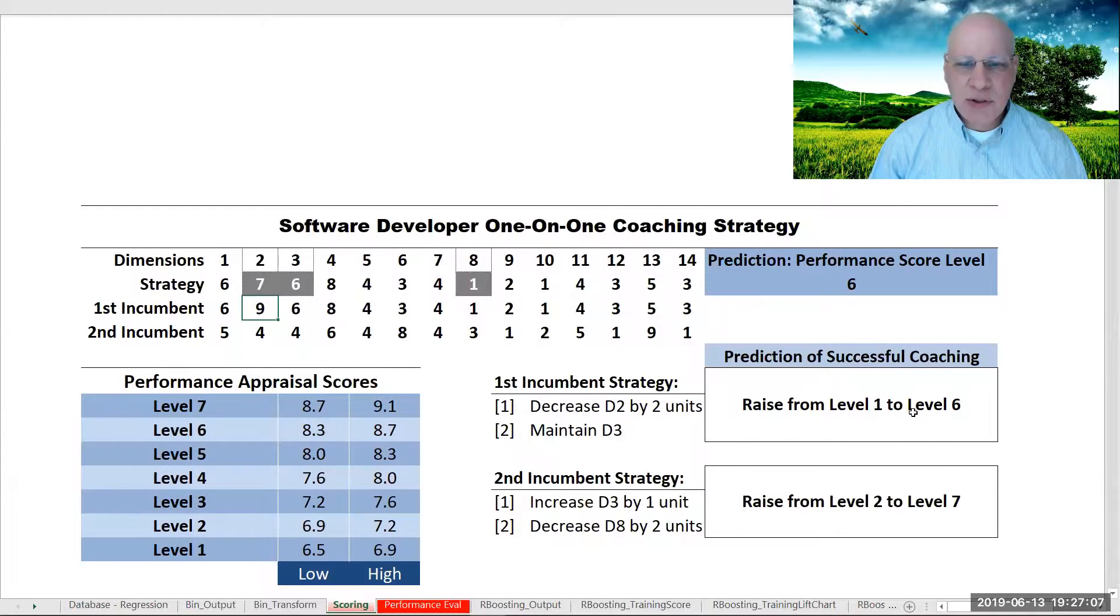We also know that we need to maintain the level in dimension 3 because if that were to be lowered in a time of stress or conflict, then we would lose performance. So that would be the strategy for the first software developer, our first incumbent.